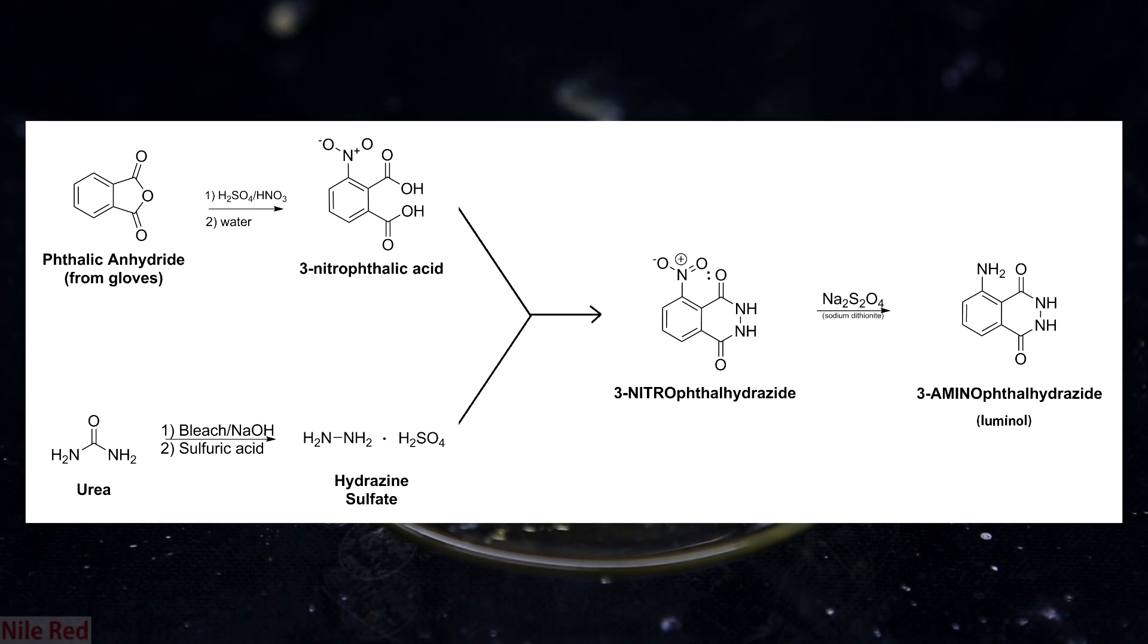We will first react 3-nitrophthalic acid with hydrazine sulfate to form 3-nitrophthalhydrazide. The NO2 group, also known as a nitro group, is then reduced to an NH2 group and this is our final luminol product. The common name is luminol, but it's also called 3-aminophthalhydrazide, so we're going from 3-nitrophthalhydrazide to 3-aminophthalhydrazide.